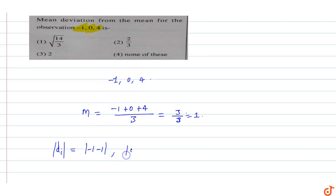So |0 - 1| and |4 - 1|. Therefore, |-2| is 2, |-1| is 1, and |4 - 1| is 3. These are the deviations.